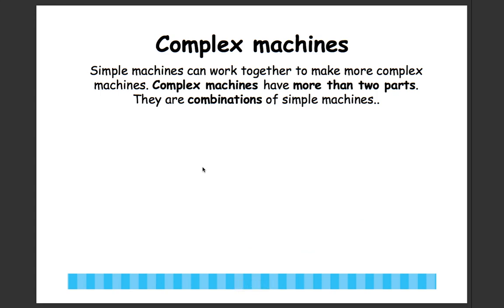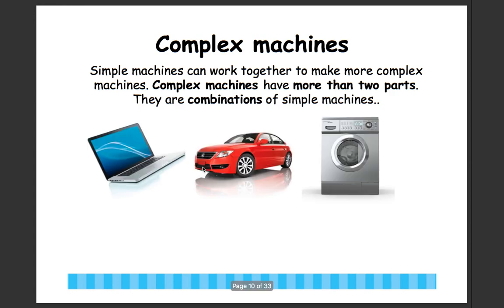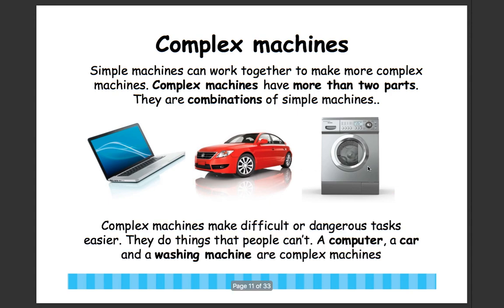Complex machines are machines that have more than two parts. Simple machines can work together to make more complex machines. They are combinations of simple machines. Some examples of complex machines are a computer, a car, and a washing machine. Complex machines make difficult or dangerous tasks easier — they do things that people can't do.